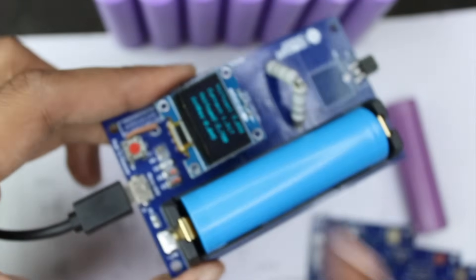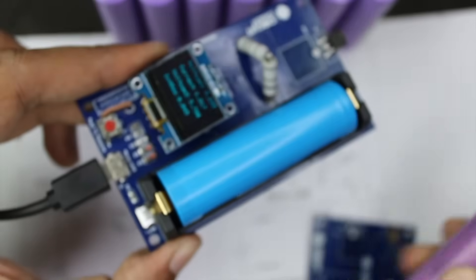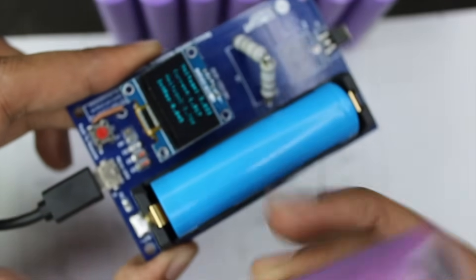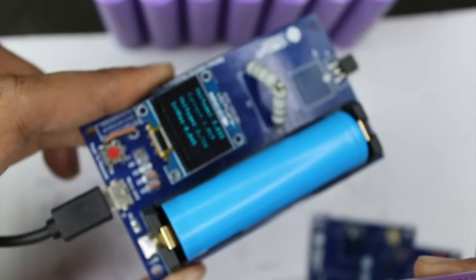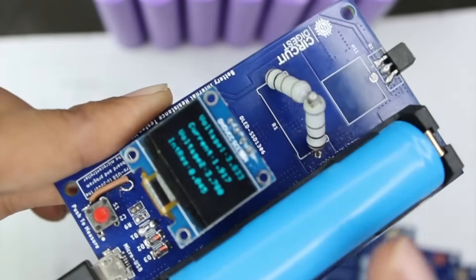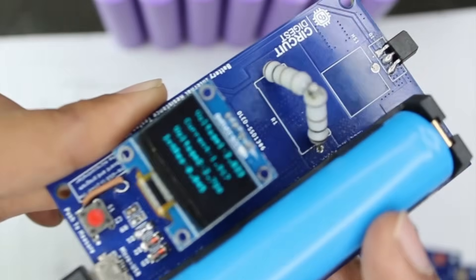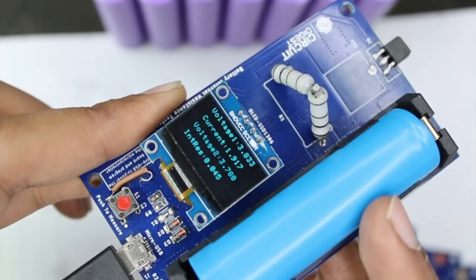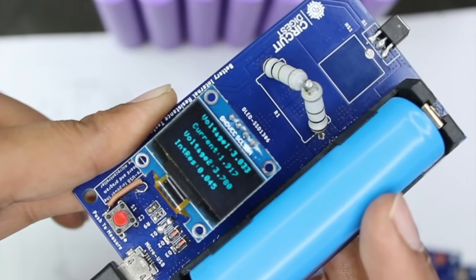I'll remove this cell and insert another cell and show you the internal resistance for this as well. Then we'll compare this with an actual IR meter to know how accurate we are. For this blue cell, the internal resistance calculated is around 0.045 ohms.